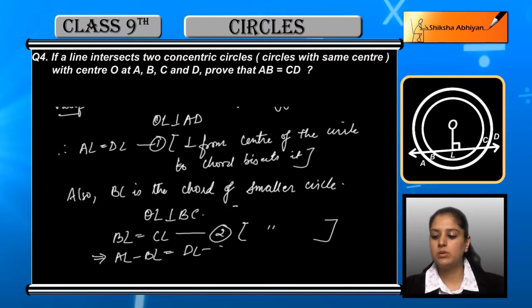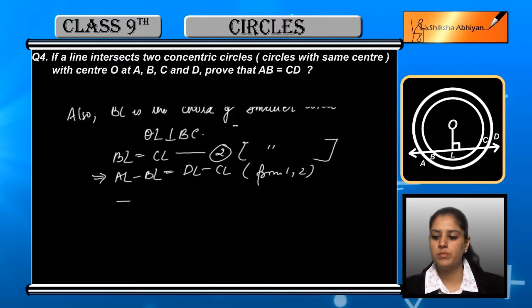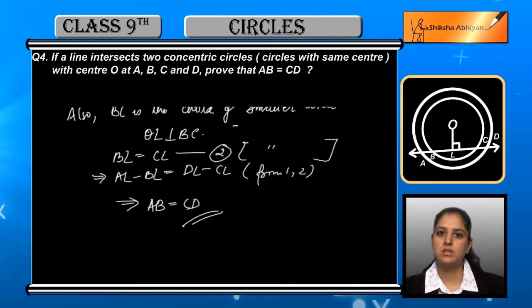Now, if we subtract both equations: AL minus BL is equal to DL minus CL. So we get AB is equal to CD. Hence it is proved.